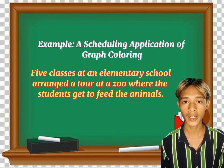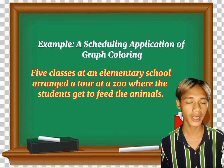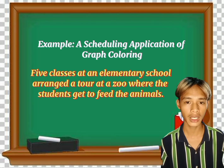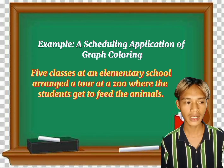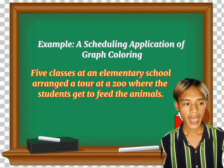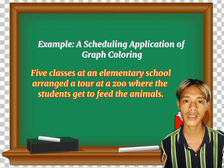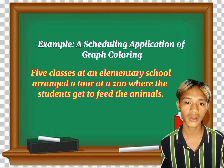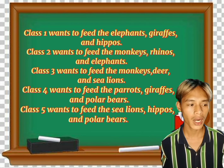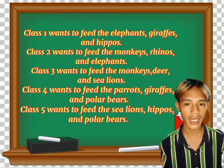Here is an example of a scheduling application of graph coloring. We have a given situation: five classes at an elementary school have arranged a tour at the zoo where the students get to feed the animals. There are five classes. Class one wants to feed the elephants, giraffes, and hippos.